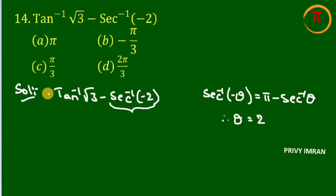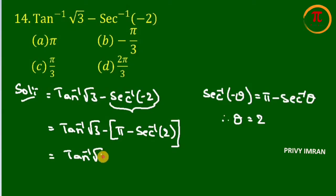Hence my next step can be written as tan inverse of root 3 minus brackets open pi minus secant inverse of 2. Now let me multiply this minus inside. Hence my next step can be written as tan inverse of root 3 minus pi plus secant inverse of 2.